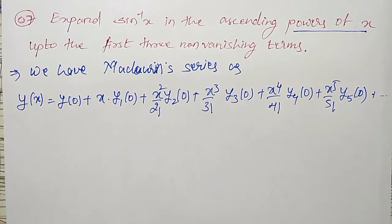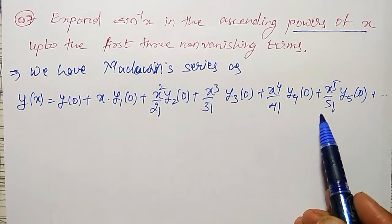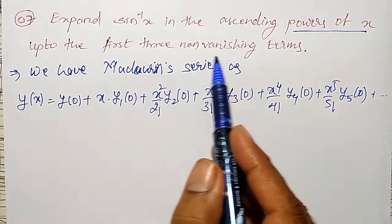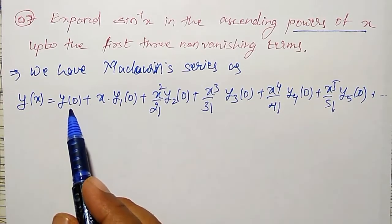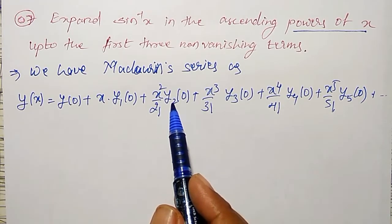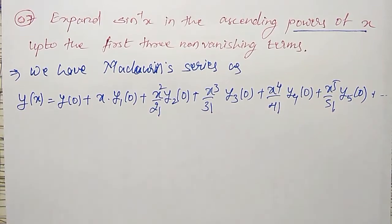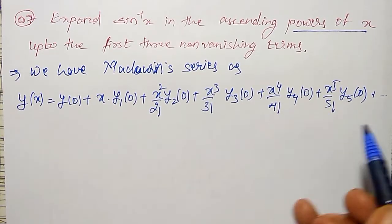We need the series up to the first three non-vanishing terms. If I find y(0), y₁(0), y₂(0) and they are not equal to zero, I stop there. If they vanish, I have to continue finding more derivatives.